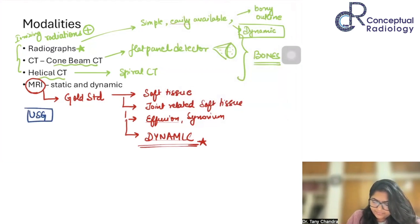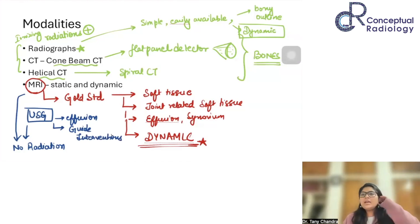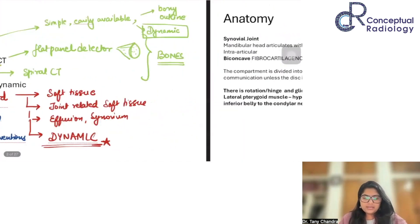The only thing about ultrasound, which is common for both MR and ultrasound, is that it does not have any radiation exposure. Ultrasound is also better to look at effusions. It can also help us to guide our interventions. If we want to do a diagnostic tap or we want to give a therapeutic injection, these all things can be done in ultrasound guidance. We have understood the modalities which we have. We understood the bones and the soft tissues to be seen.